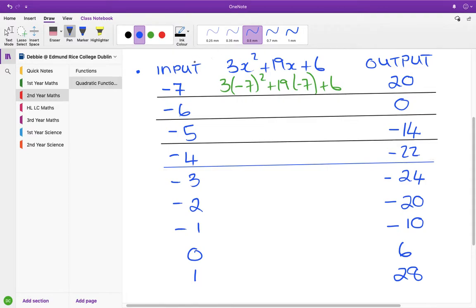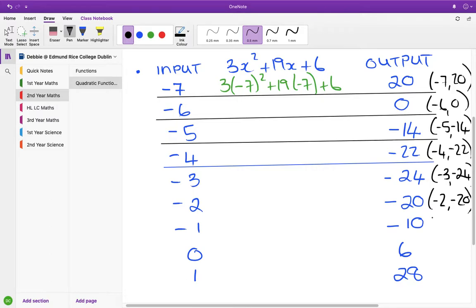So you can see the ordered pairs. You have minus 7 and 20. So we're going to have to plot them together. Then we have minus 6 and 0. Minus 5 and minus 14. Minus 4 with minus 22. Minus 3 and minus 24. Minus 2 and minus 20.